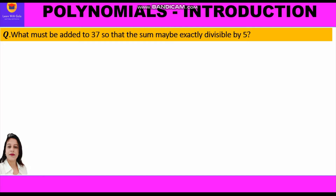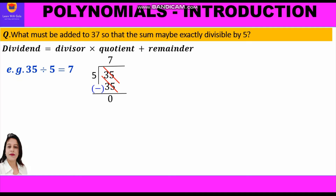First, let me explain this question by taking an example with whole numbers. Suppose we have: what must be added to 37 so that the sum may be exactly divisible by 5? The division algorithm states: dividend = divisor × quotient + remainder. If we divide 35 by 5, we get remainder 0 and quotient 7, so 35 = 5 × 7 + 0.